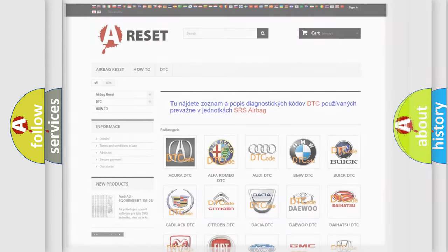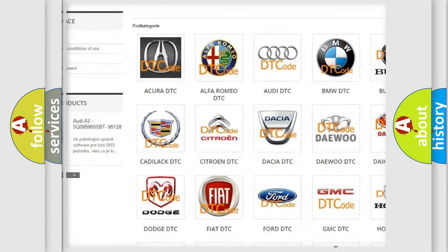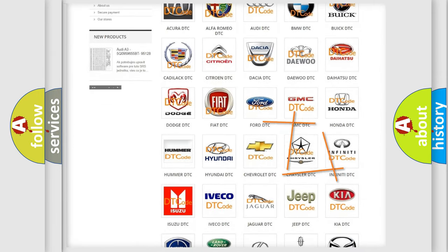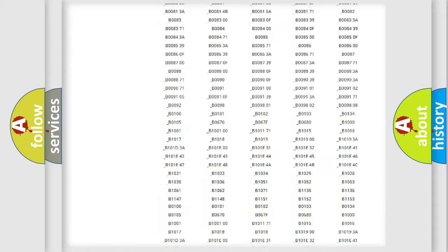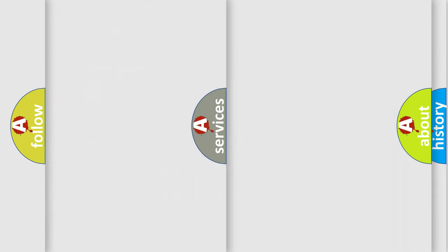Our website airbagreset.sk produces useful videos for you. You do not have to go through the OBD2 protocol anymore to know how to troubleshoot any car breakdown. You will find all the diagnostic codes that can be diagnosed in Chrysler vehicles, also many other useful things.